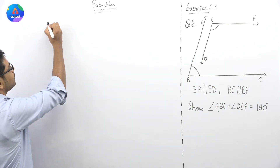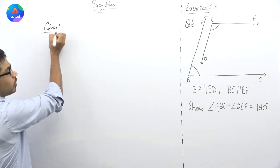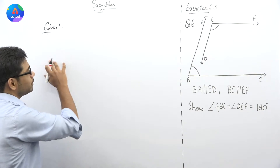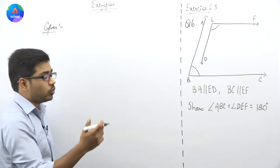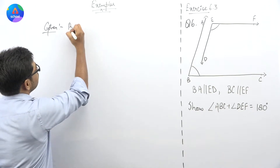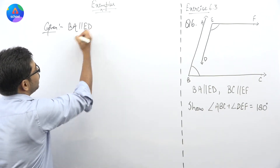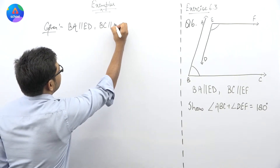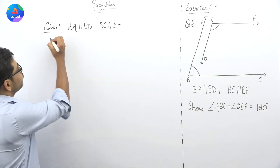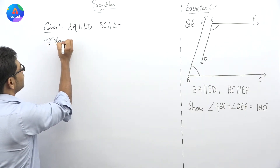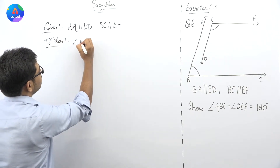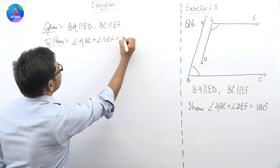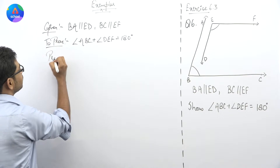Let us set up the question in the same format: first write 'Given,' then 'To Prove,' then come to the 'Proof.' Given: BA is parallel to ED, and BC is parallel to EF. To Prove: angle ABC plus angle DEF is equal to 180 degrees.